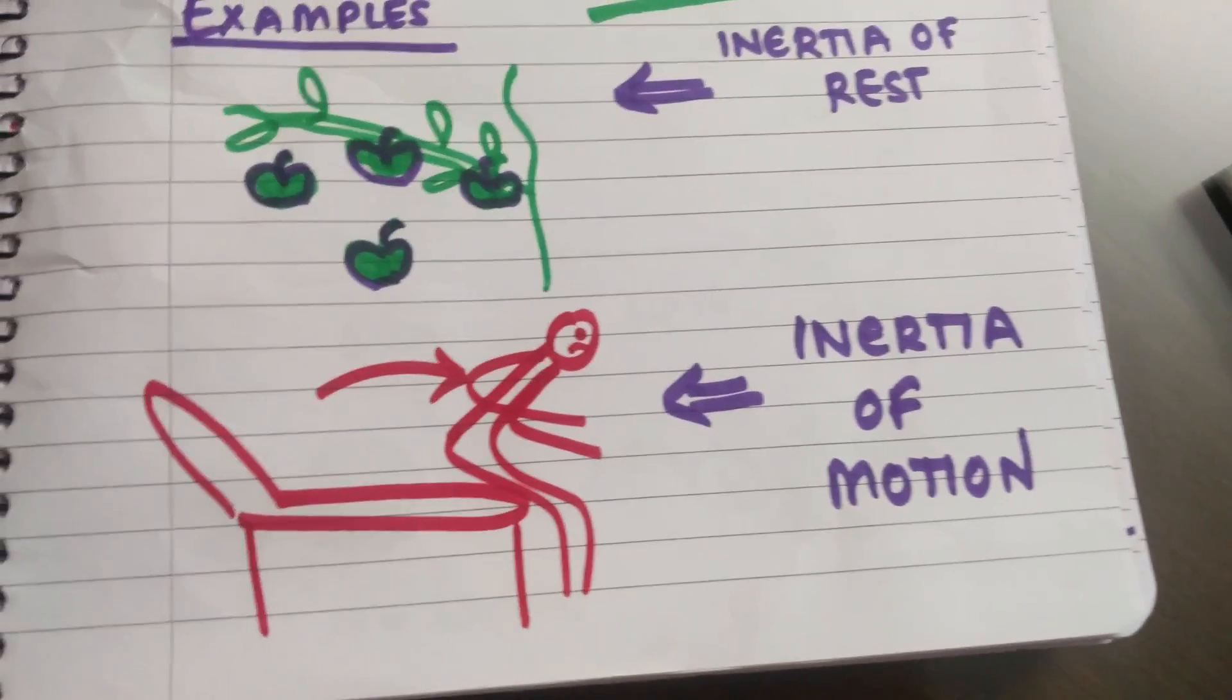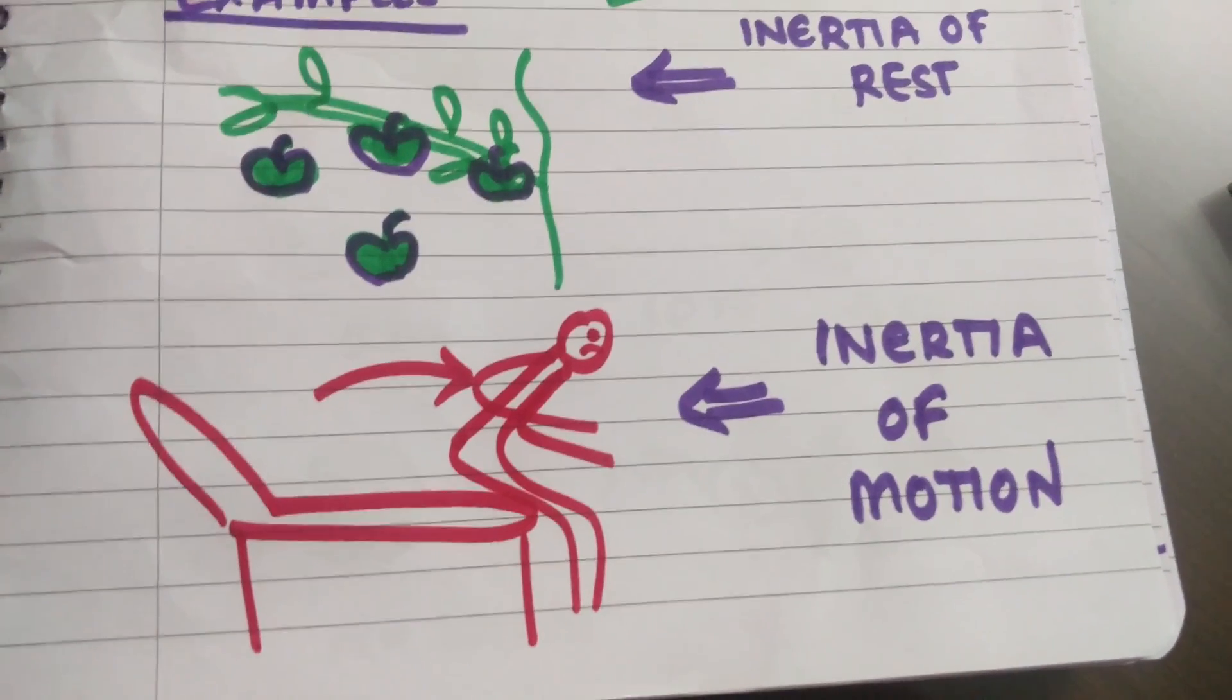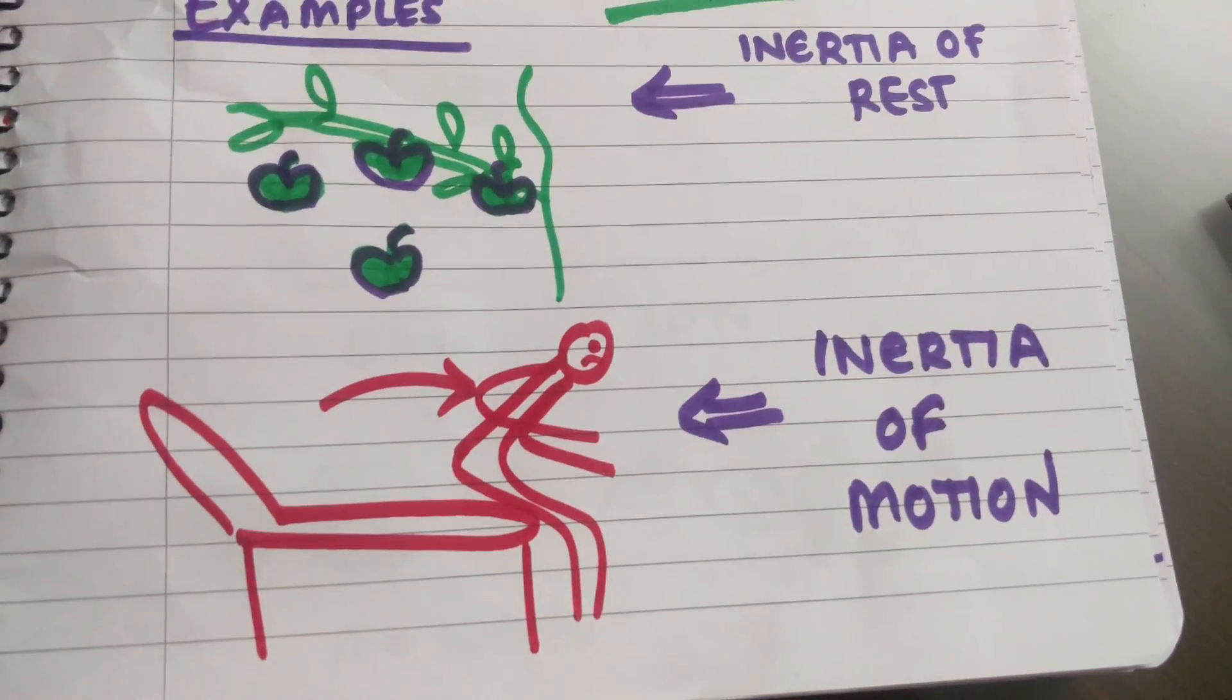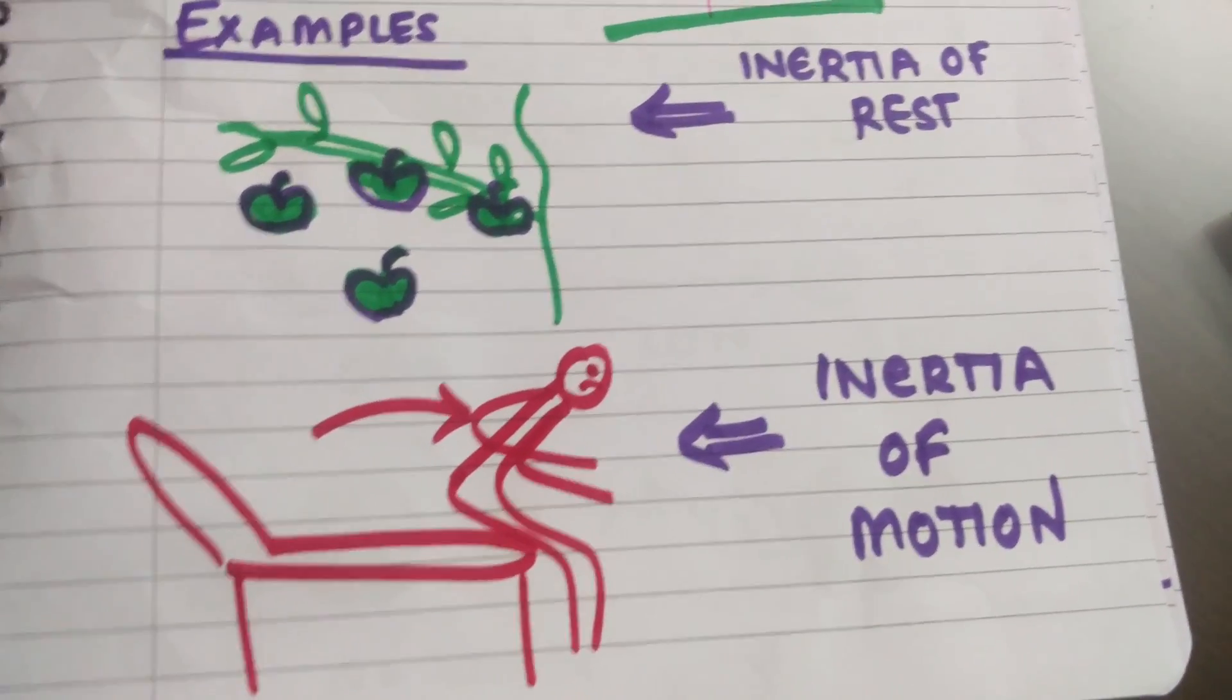An example of inertia of motion is that when a car is moving and it brakes suddenly, we tend to lean forward. This is because when we are initially moving, we are moving with the speed of the car, and we have a tendency to remain in that state of motion.